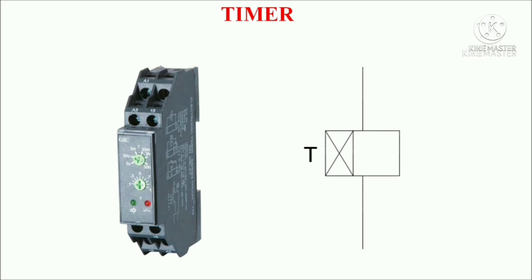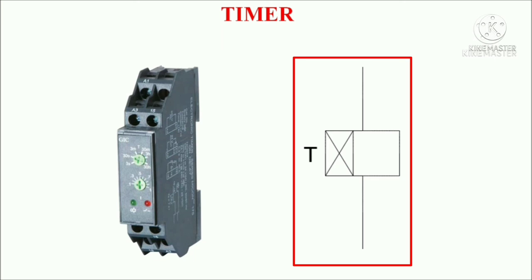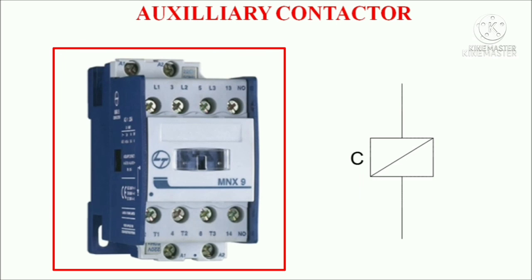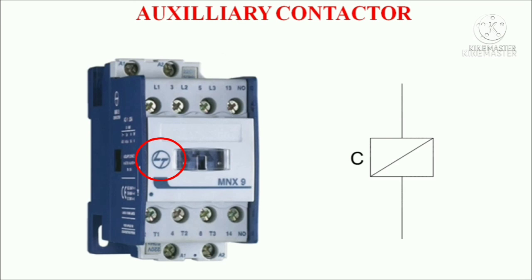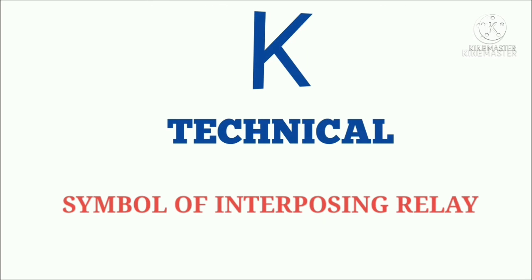Symbol of timer. We have different types of timers: on delay timer, off delay timer, retentive timer, and cyclic timer. The physical appearance of on delay timer is shown here and the symbol is shown here. Symbol of auxiliary contactor is shown here — the make of this auxiliary contactor is L&T and the symbol is shown here. Symbol of interposing relay.